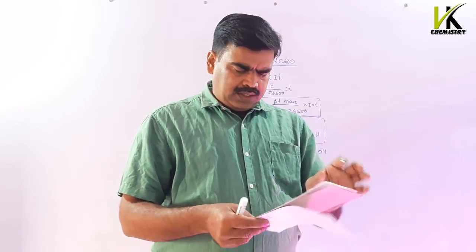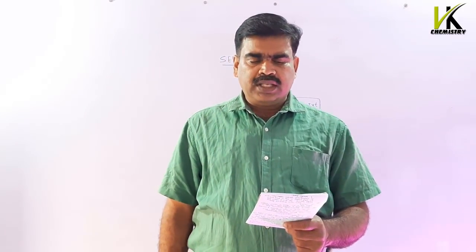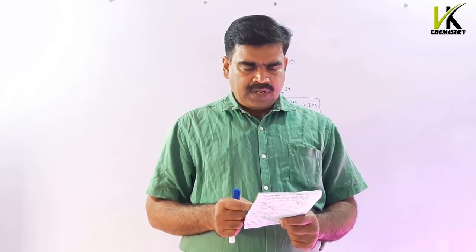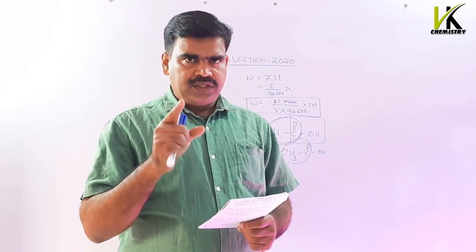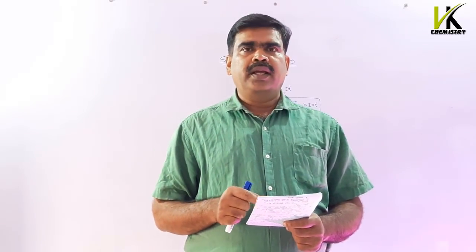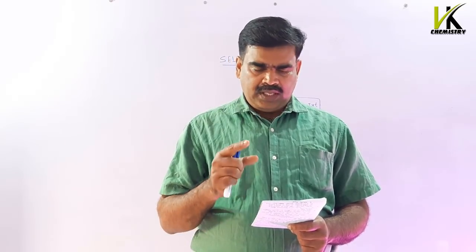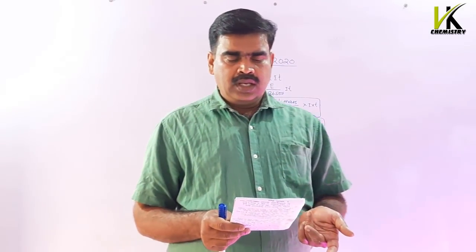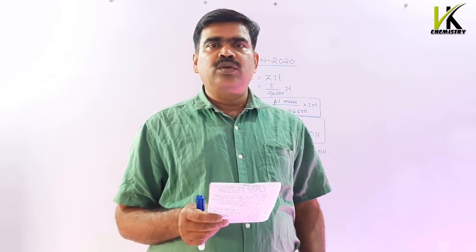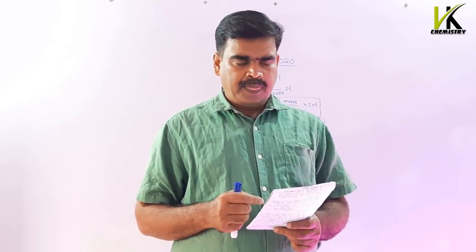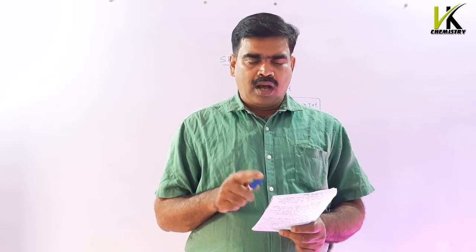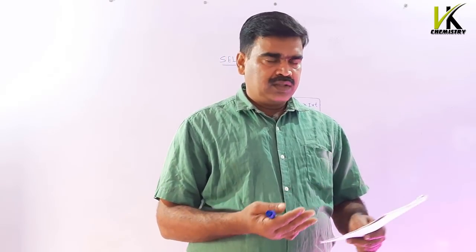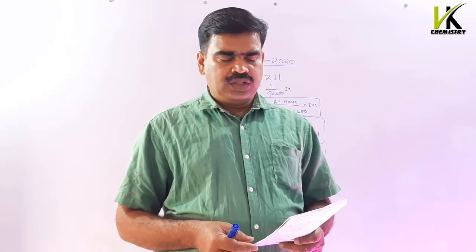How is methyl amine prepared from nitromethane and acetamide? How does it react with: A — acetyl chloride, B — excess methyl iodide? How is benzene diazonium chloride prepared from aniline? Starting from benzene diazonium chloride, prepare: A — chlorobenzene via Sandmeyer reaction, B — para-hydroxy azobenzene.